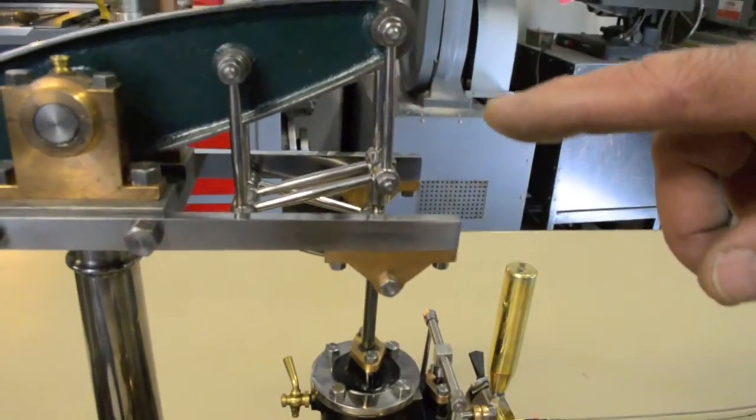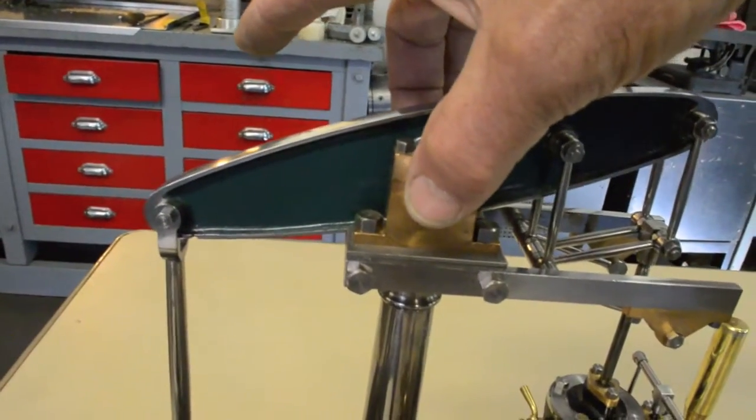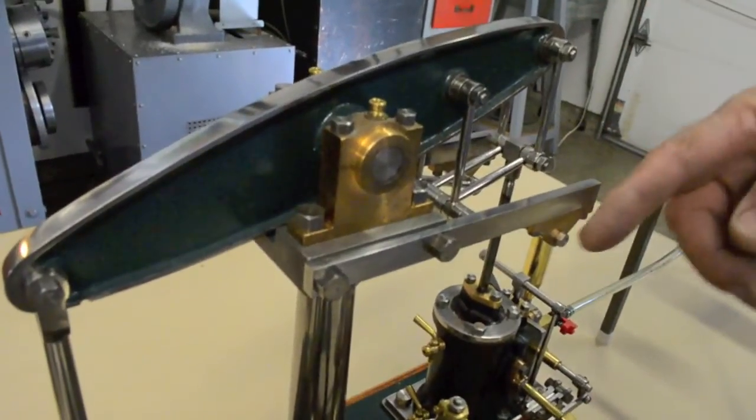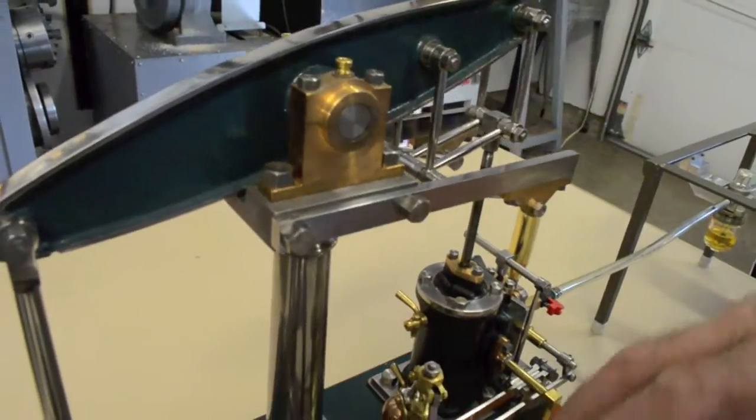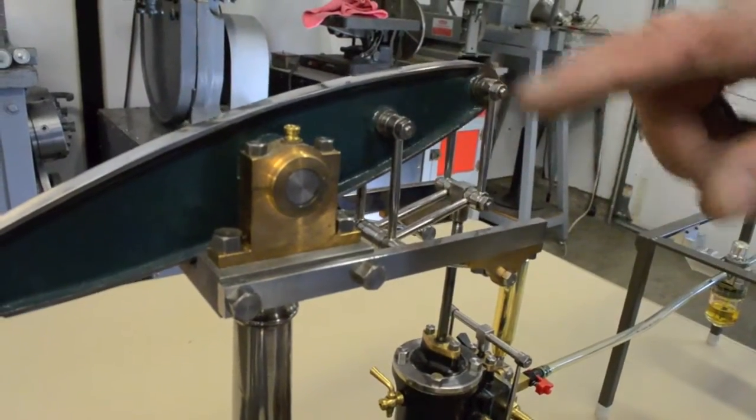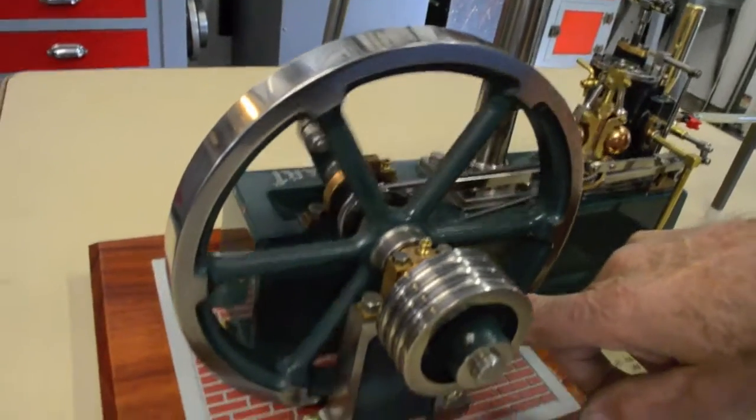You notice as the piston is at its uppermost travel, we have a parallelogram here with these four links, and as it goes down, the parallelogram is maintained but in the opposite direction, thereby keeping the connecting rod vertical.